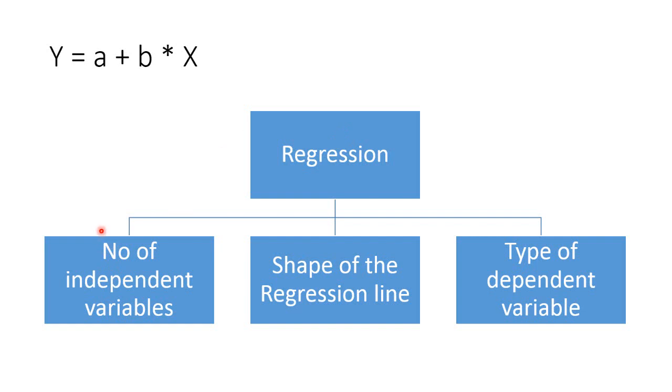The first way of classification is the number of independent variables. In this equation, we have just one independent variable, we can have several independent variables. So, we can classify regression equation based on how many number of independent variables are there in the regression equation.